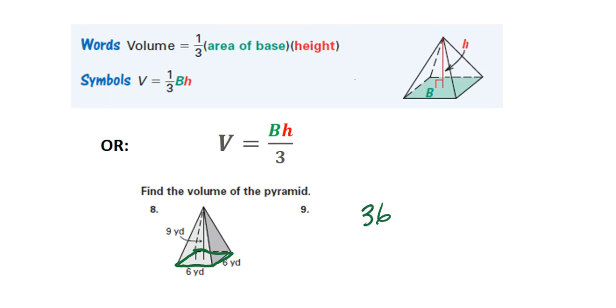Can't forget about that one-third, or you can divide by 3. So area of the base times the height. But remember, we always have to divide by 3 if we're talking about a pyramid or a cone. So that's equal to 36 divided by 3 is 12, and 12 times 9 is 108 yards cubed.